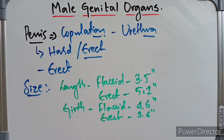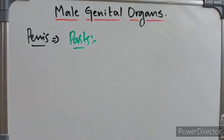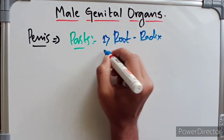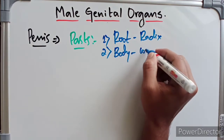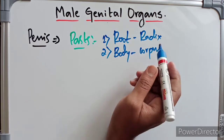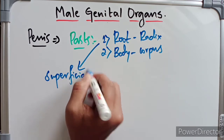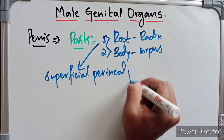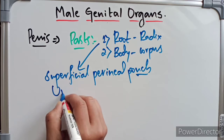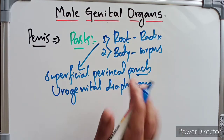Now we are going to discuss the parts of the penis. It has mainly two parts: one is the root of the penis, also called the radix of the penis, and the other part is the body, also called the corpus. The root is an attached portion and is not seen on the surface, and the body is a free pendulous portion. The root of the penis is situated in the superficial perineal pouch and is attached to the inferior aspect of the urogenital diaphragm.